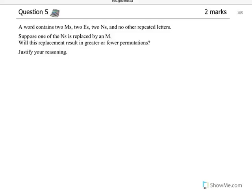Question five on this exam is a permutations question. So two M's, two E's, and two N's. And they're saying if one of the N's is replaced with another M. So I'll write the second version. So this is sort of the first set. That's an M there. The second set will be one of the N's is replaced by an M.